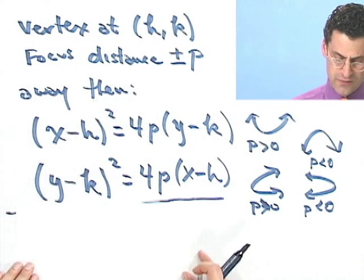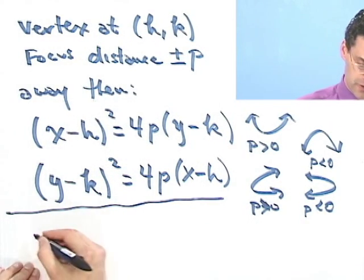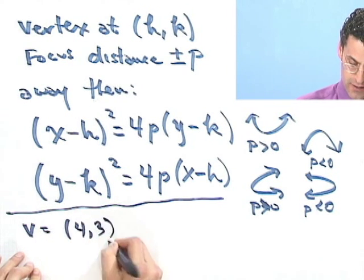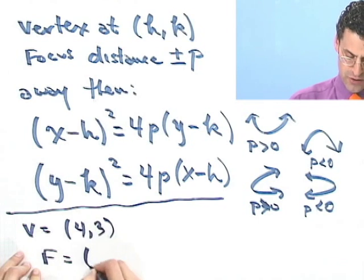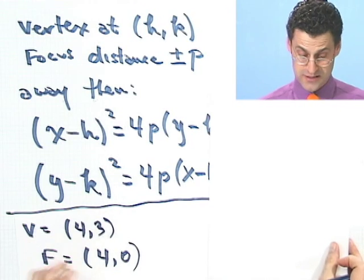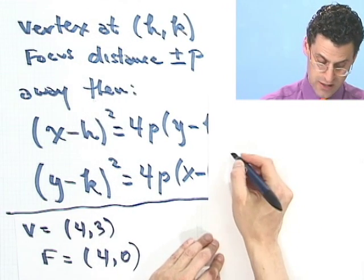Suppose I tell you I'm thinking of a parabola, and the vertex of this parabola is located at (4,3), and its focus is located at (4,0). Name that parabola. The first thing I would do is sketch a picture of it and see what this thing looks like.